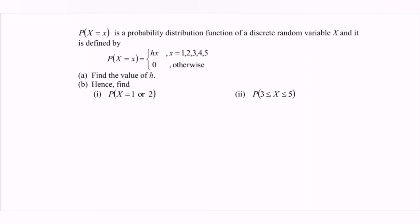The question gives us the probability distribution function of a discrete random variable x, defined as the piecewise function h(x) with domain x = 1, 2, 3, 4, and 5, and 0 otherwise. We need to find the value of h.